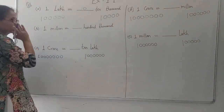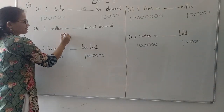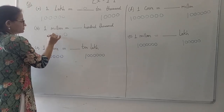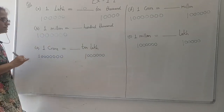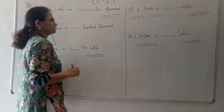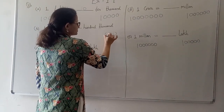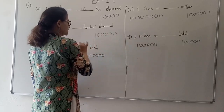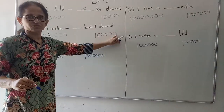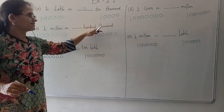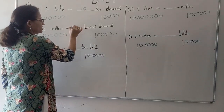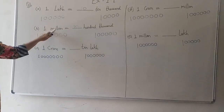Similarly, one million. Now this is the international system of numeration. One million, if I have to write from the back: ones, tens, hundred, thousand, ten thousand, hundred thousand, and one million. There are six zeros in one million. Similarly, if I write hundred thousand: ones, tens, hundred, thousand, ten thousand, and hundred thousand — that has five zeros. To make both equal, if I add one zero to it, it would become one million. So ten hundred-thousands together will form one million.